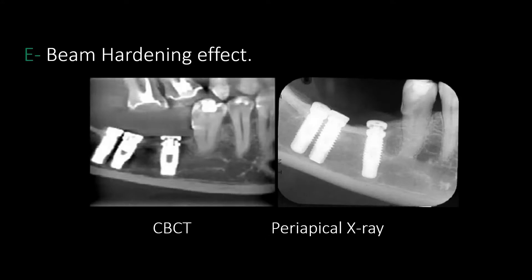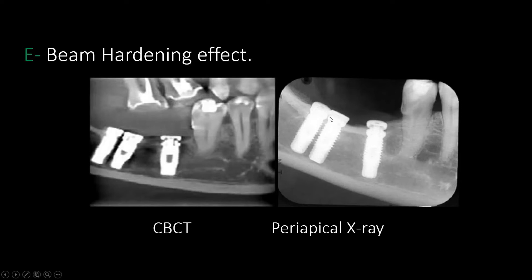How does beam hardening relate to implantology? Looking at the image on the left, between two posterior implants it appears quite pitch black, which someone without experience might interpret as significant bone loss between the implants. But if we take a periapical X-ray of the same patient, you'll find there is no bone loss whatsoever. This tells us that for implant follow-up, it is always advised to use periapical X-rays rather than CBCTs due to the beam hardening effect. If you ever see a CBCT suggesting bone loss around an implant, always verify using a periapical X-ray.